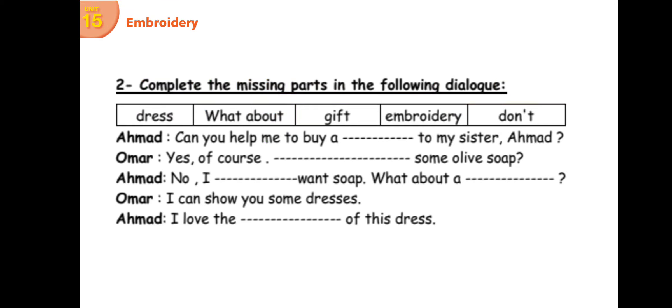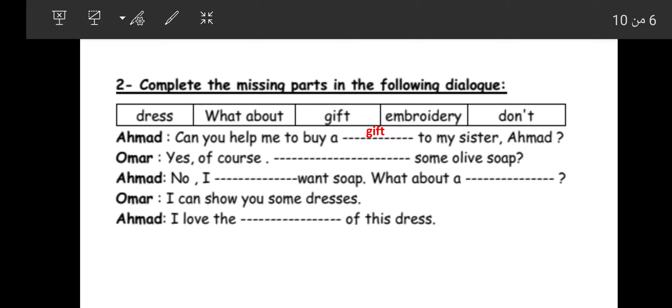Now complete the missing parts in the dialogue. Ahmad says: 'Can you help me to buy a gift for my sister?' Remember: in exams, 'buy' is linked with 'gift.' If you see 'pattern,' look for 'color.' If you see 'spend,' look for 'money.' If you see 'river,' look for 'bridge.' If you see 'turn,' look for 'right' or 'left.' These words are connected.